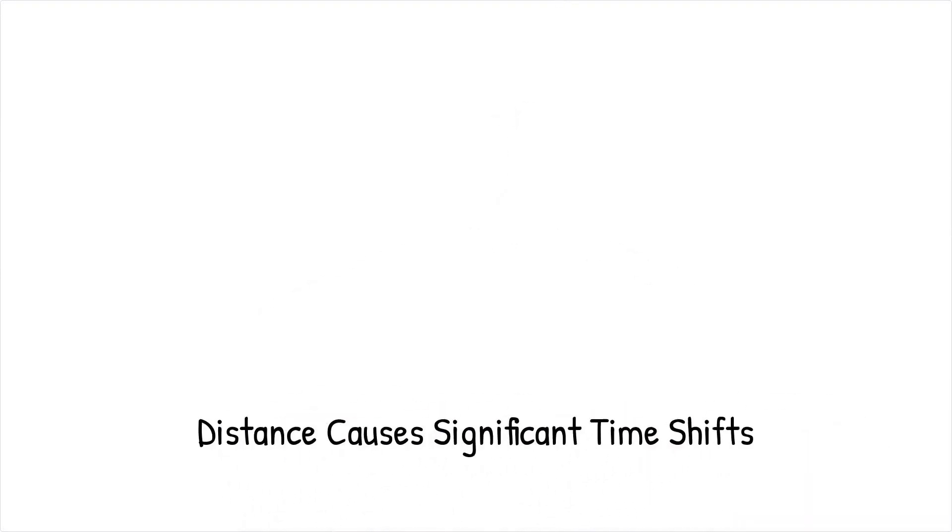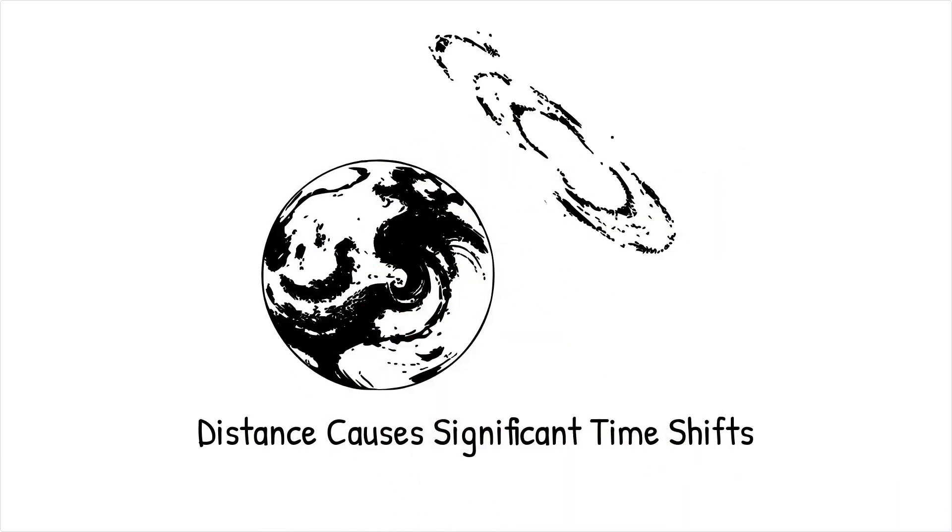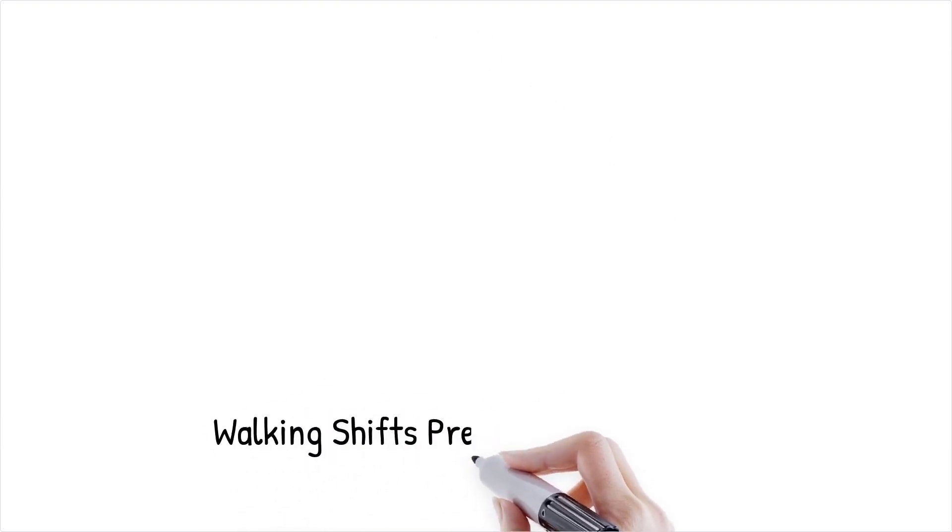This means that by simply walking in one direction, a person could theoretically shift their present moment in Andromeda from before an intergalactic war begins to a time when it has already ended.